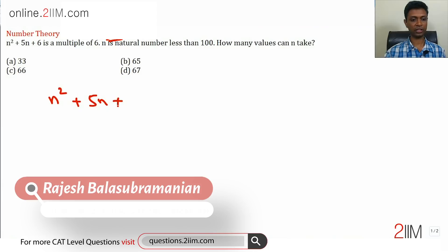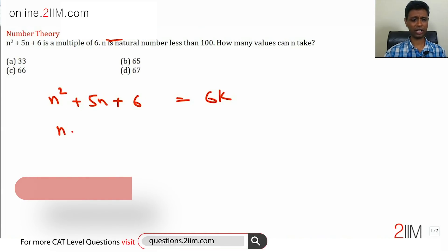n² + 5n + 6 is a multiple of 6, n is a natural number less than 100. How many values can n take? n² + 5n + 6 is nothing but (n+2) into (n+3), the product of two consecutive numbers.